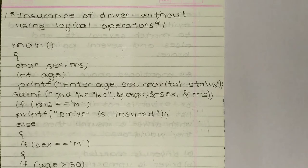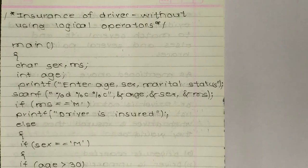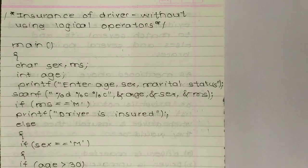Now scanf with %d %c %d %c %c, comma, ampersand age, ampersand scx, ampersand ms — here we are telling the compiler to read the entered values. %d is used because age is an integer, and %c is used for the remaining characters. So %c is for character and %d is for integer.